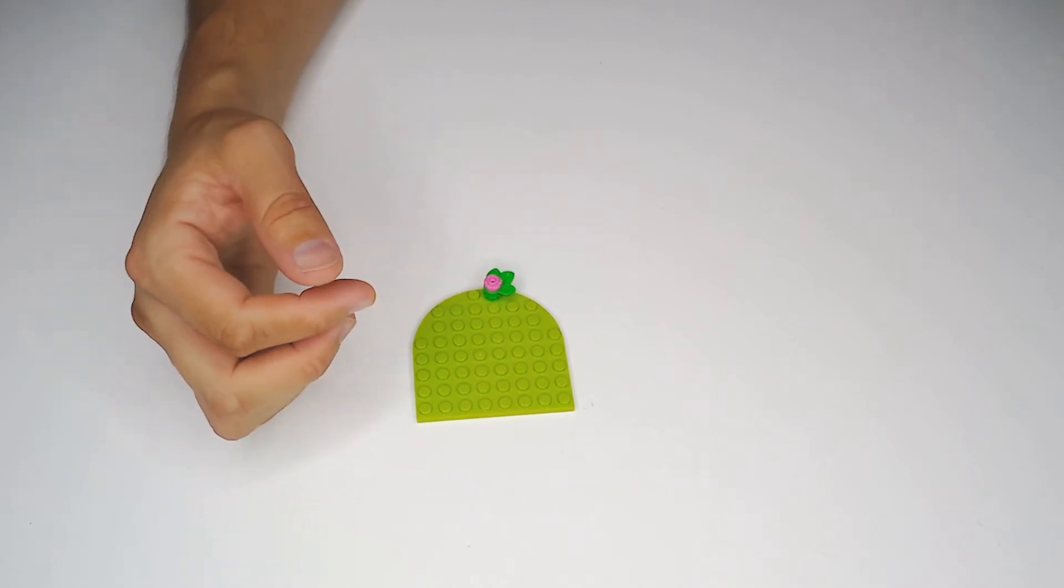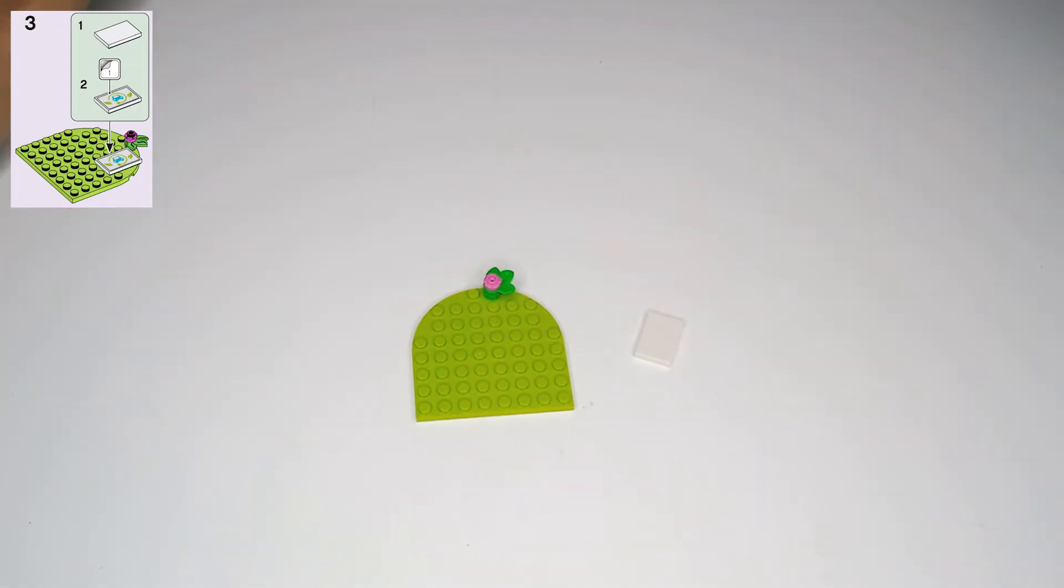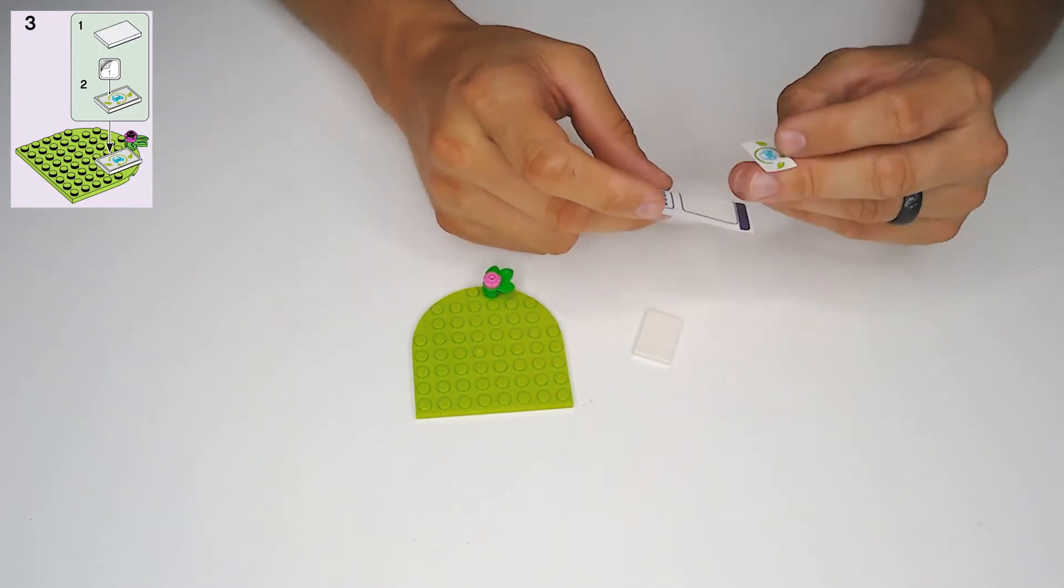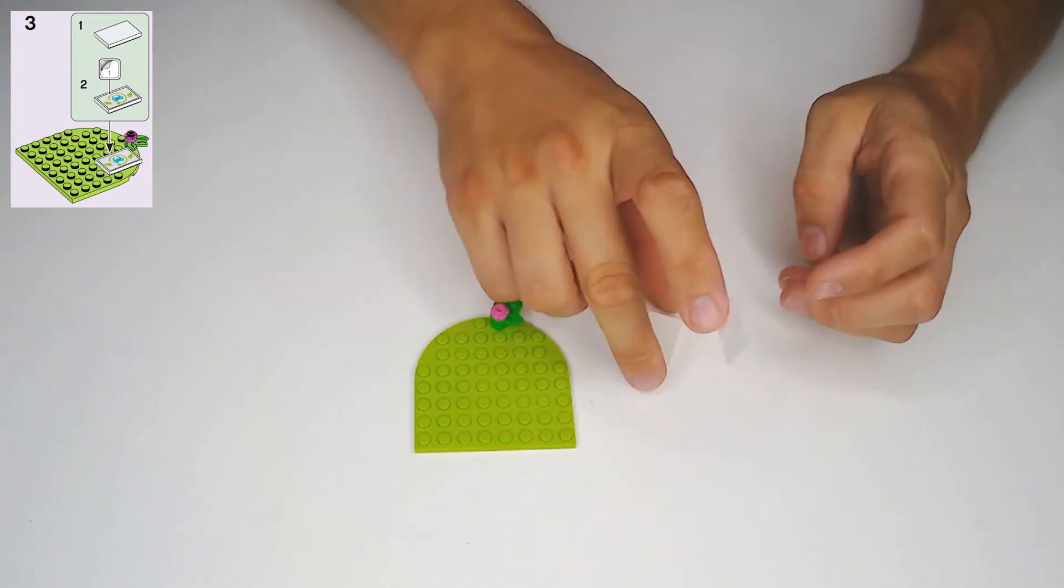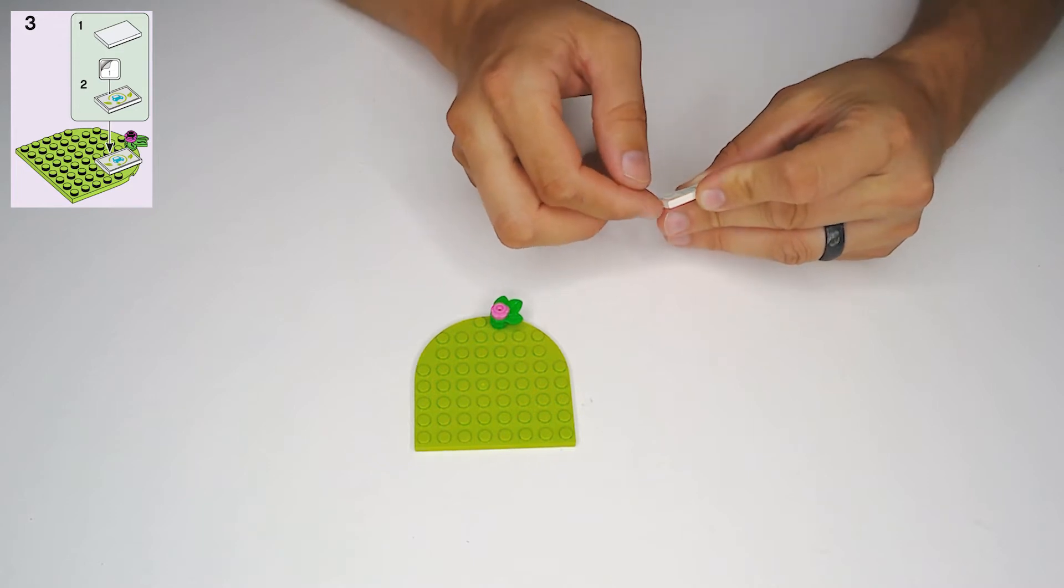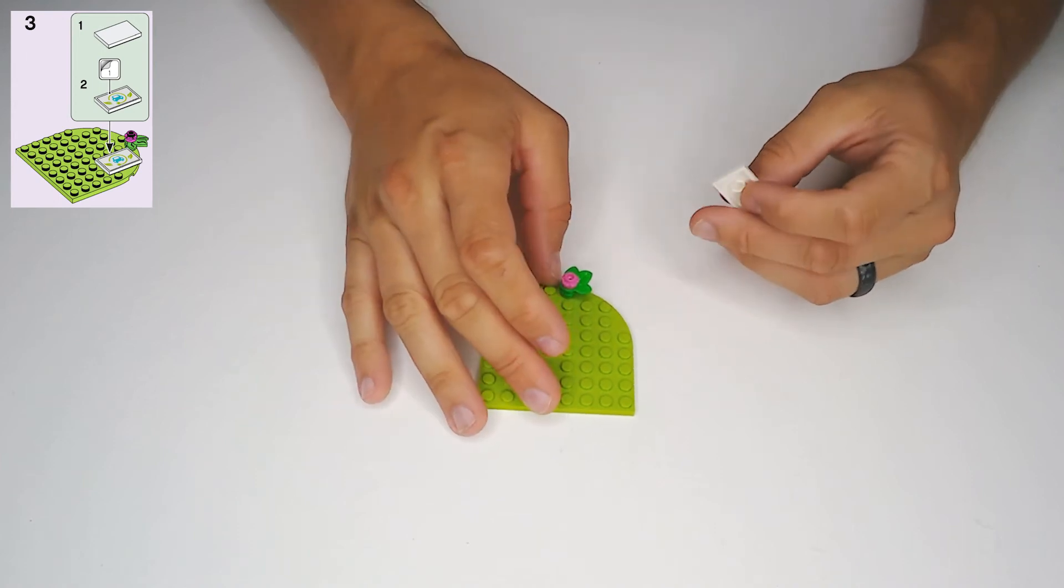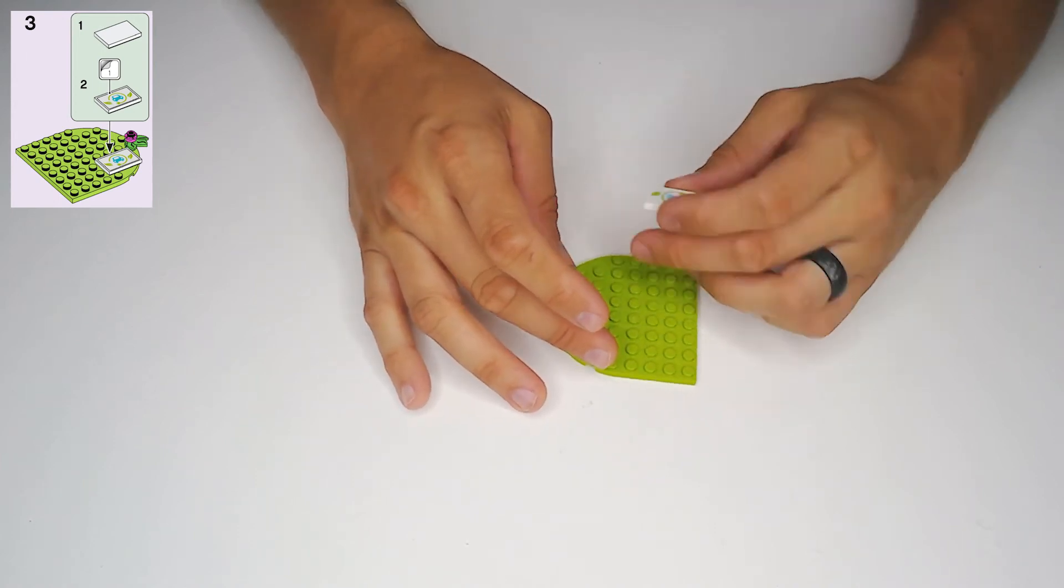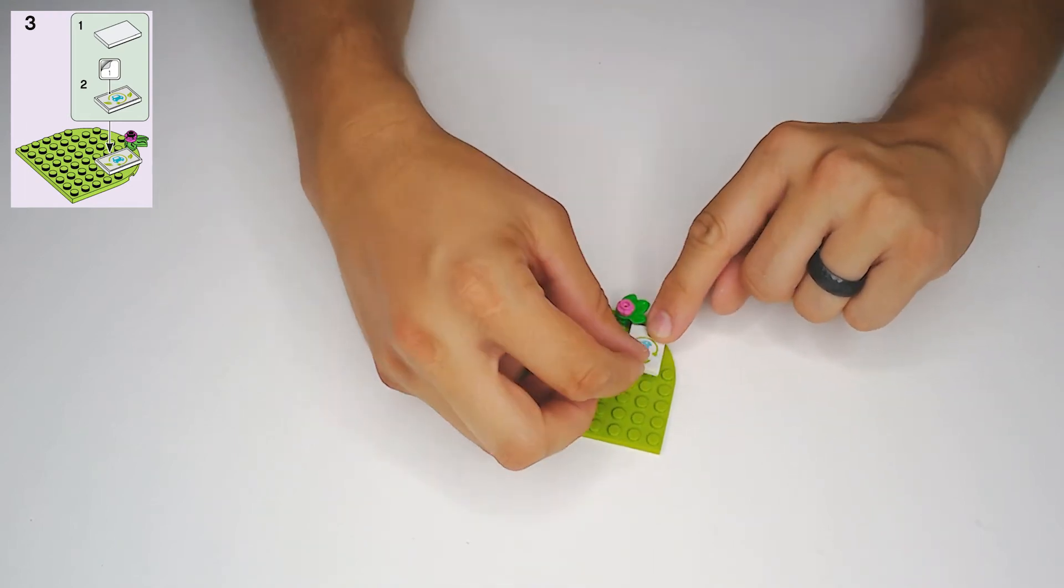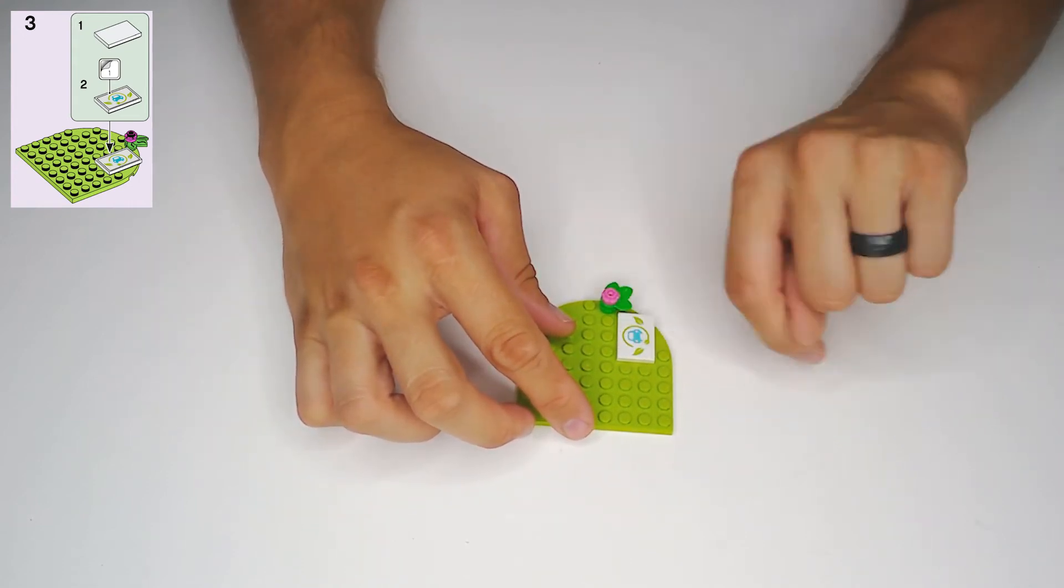And then in step three, let's grab a white two by three tile, and we need decal number one. Okay, decal number one has this little car logo with the leaves on the side and the little green plug circling it. So I'll just center it there, make sure it's aligned, and smooth it down. Okay, so then this is going to go on here. Okay, so you're going to align this corner stud right here with the corner from that tile, and the bottom of this design, this graphic here is going to be facing off to the right.